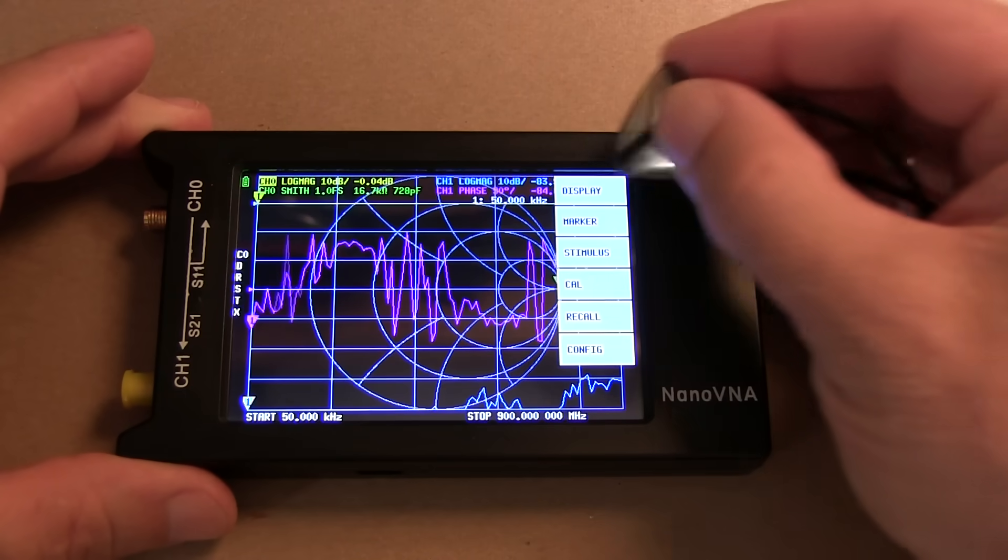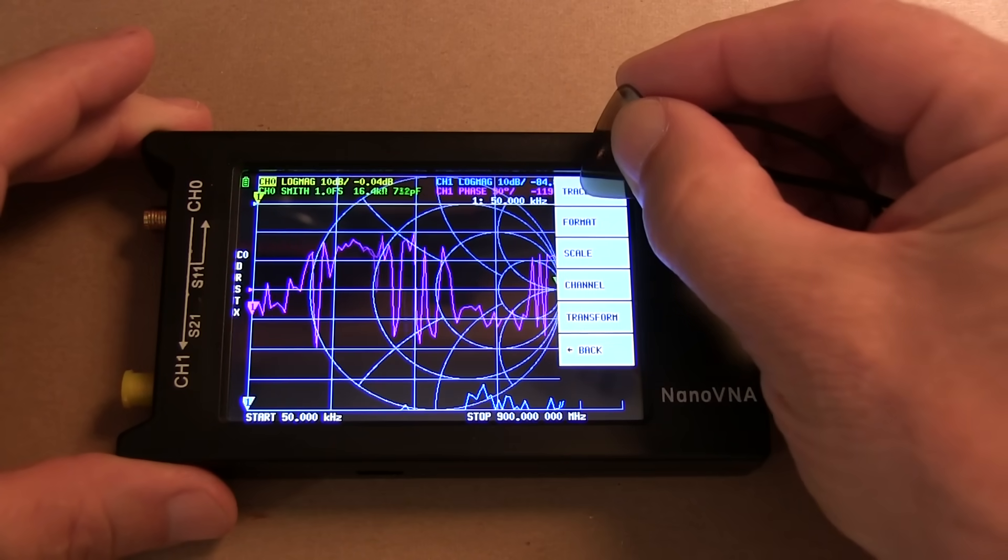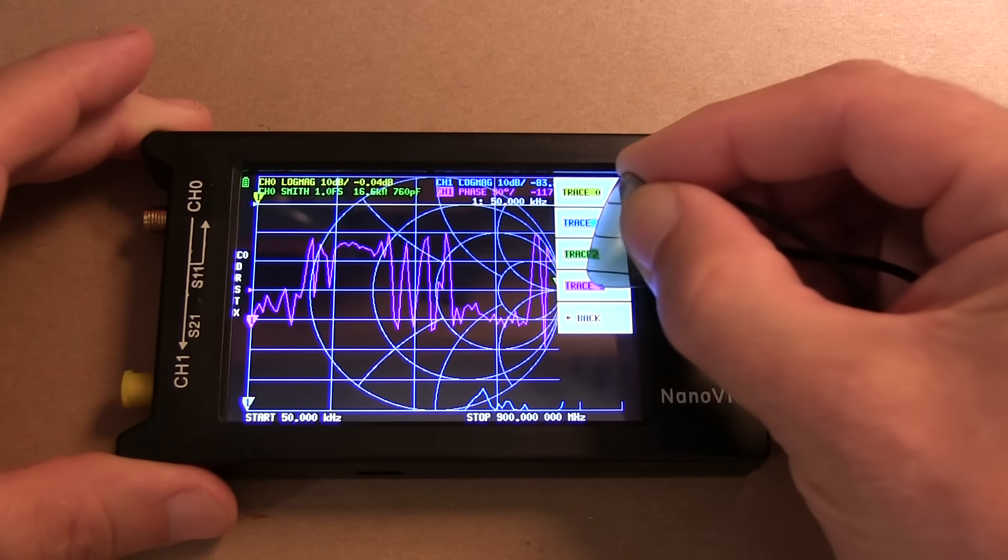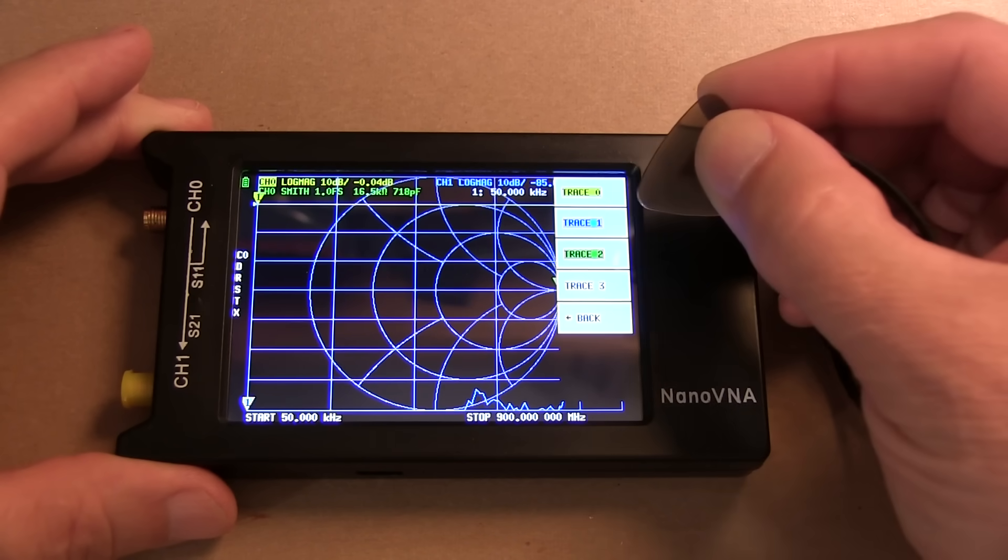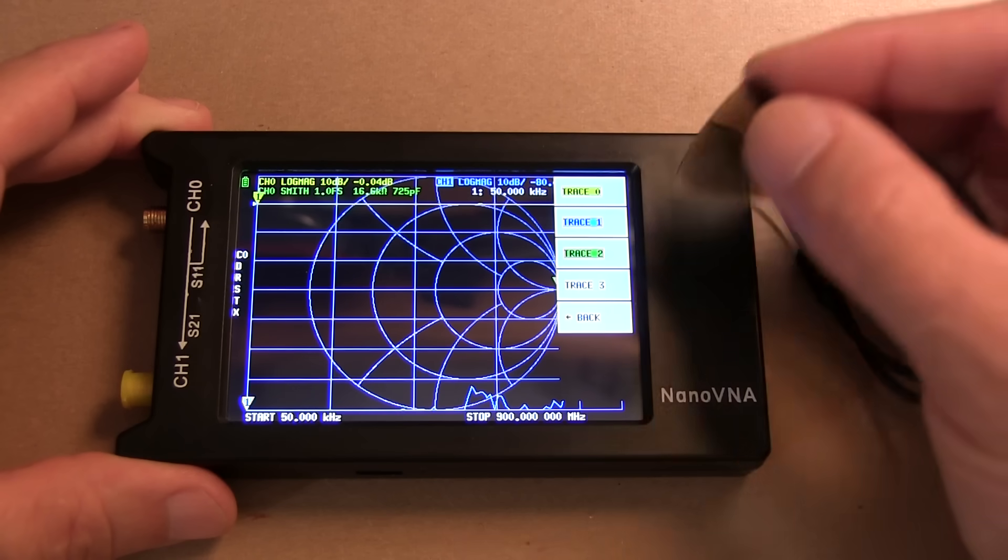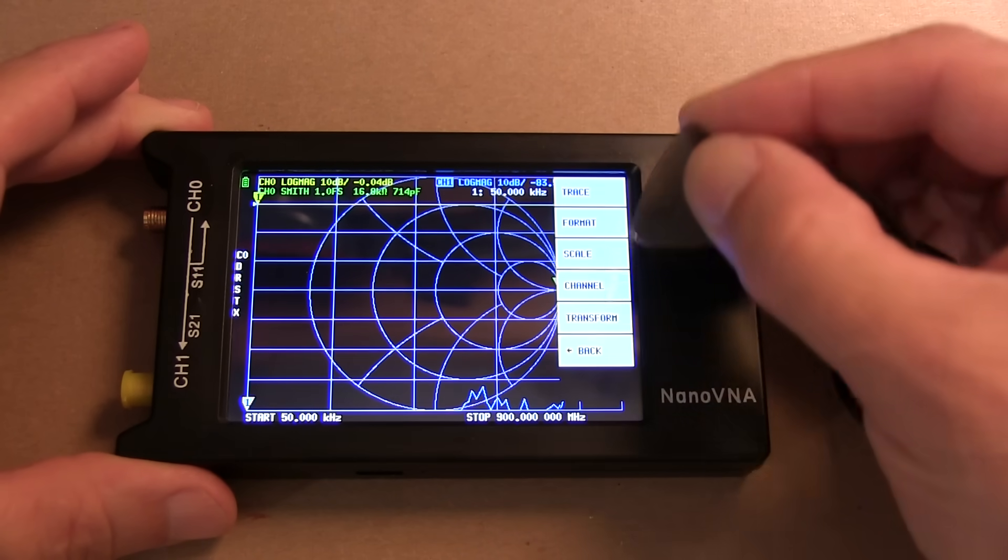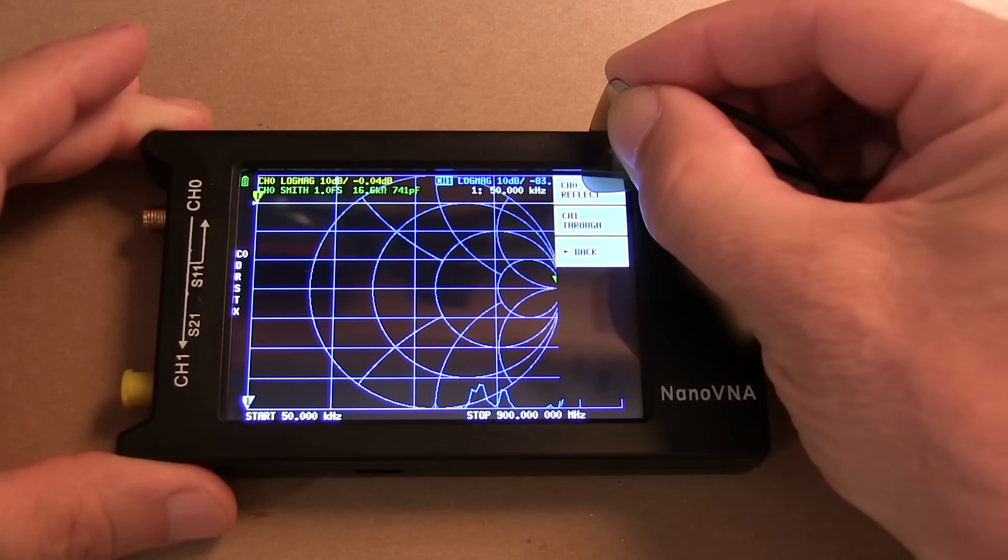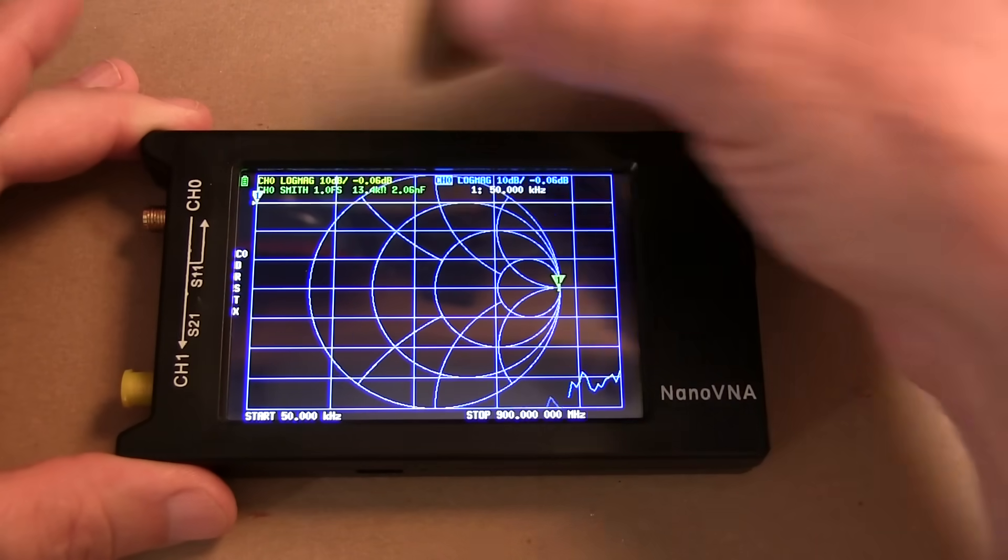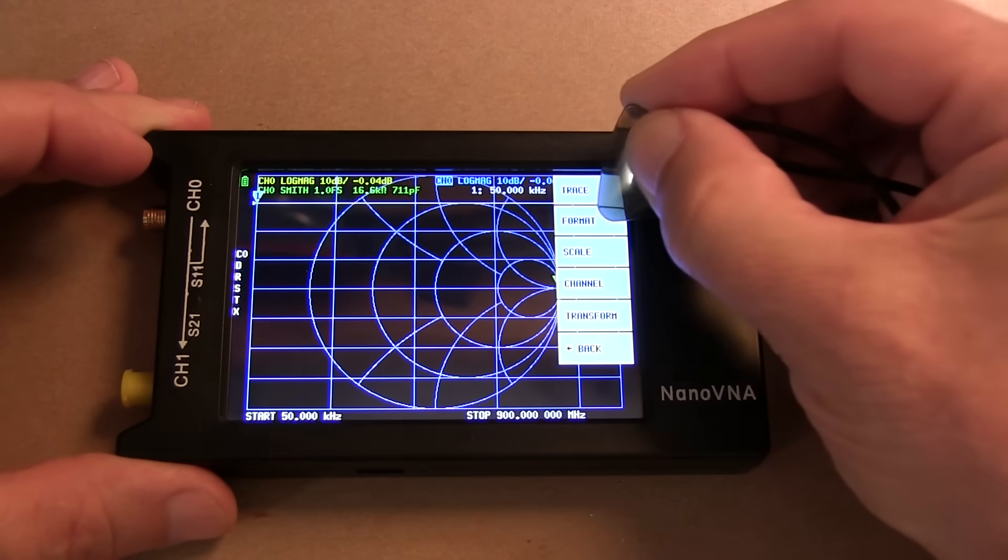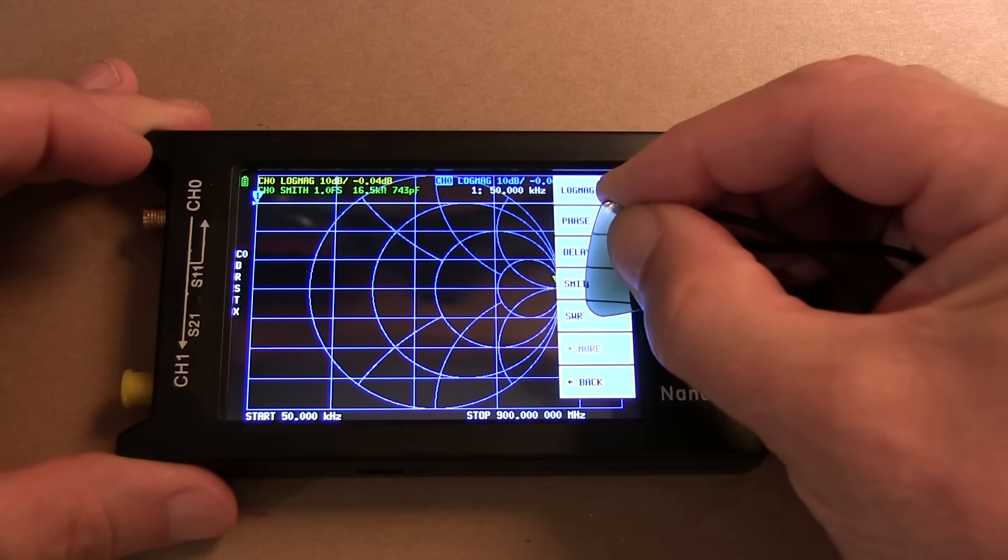So we bring up the menu, go to display, go to trace, and let's first just get rid of purple trace by touching on it, touching on it again to get rid of it. And then we'll select trace number 1, the inverse text tells us we're selected. We'll go back, and then tell it to be on channel 0, which is the reflection channel, or the S11 channel. And now we just have to go back in one more time to the format and hit SWR.